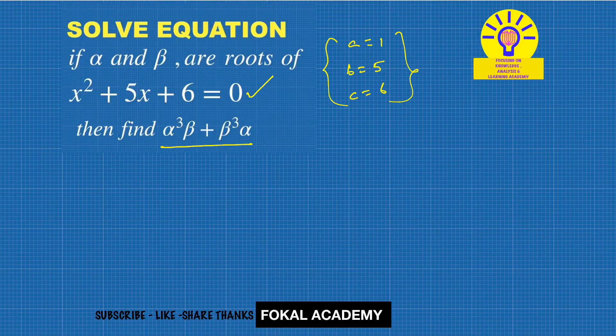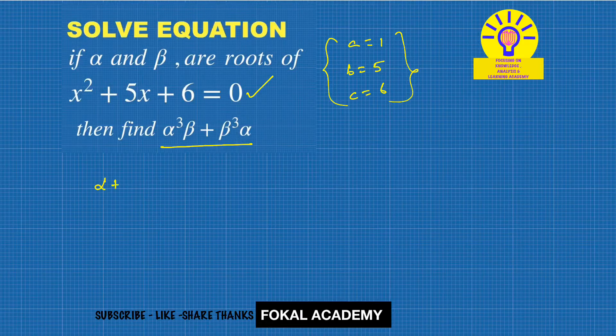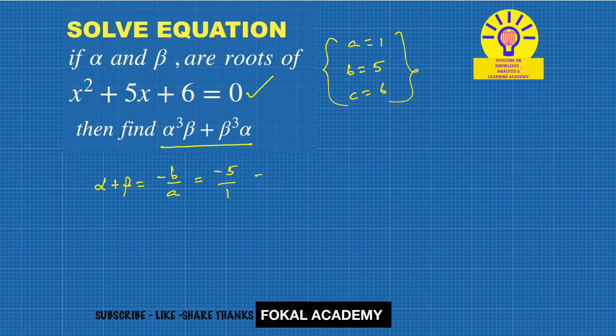We know that the sum of the roots, α + β, is equal to -B/A, which equals -5/1 = -5. This is equation 1.